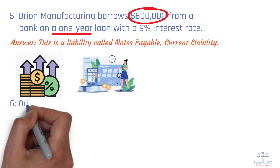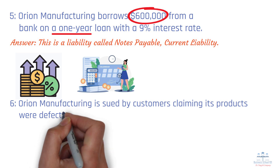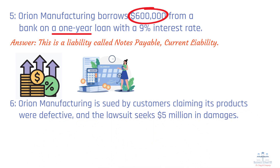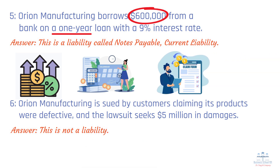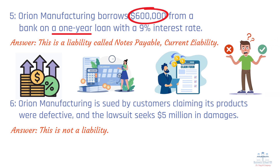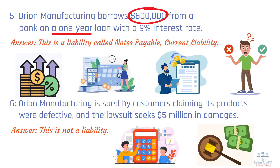Scenario 6: Orion Manufacturing is sued by customers claiming its products were defective, and the lawsuit seeks $5 million in damages. Answer: This is not a liability. While the company may eventually have to pay damages, no definite obligation exists yet. A lawsuit outcome is uncertain — Orion could win the case, settle for a lower amount, or lose entirely. Liabilities require a measurable and probable obligation, which is not the case here. Until the lawsuit reaches a settlement or verdict, the company does not need to record a liability on its balance sheet.